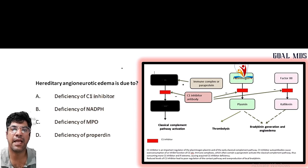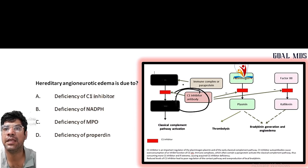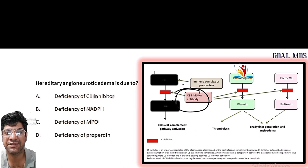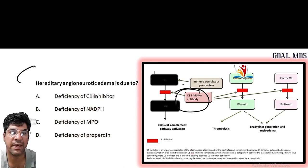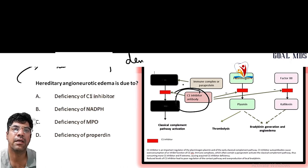Hereditary angioedema is due to deficiency of the enzyme C1 inhibitor, which is a regulatory protein of the complement system. This deficiency leads to uncontrolled activation of the complement system, resulting in recurrent episodes of swelling and edema in the skin and mucous membranes.